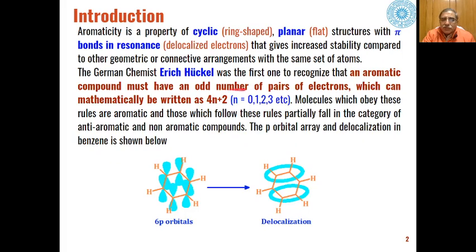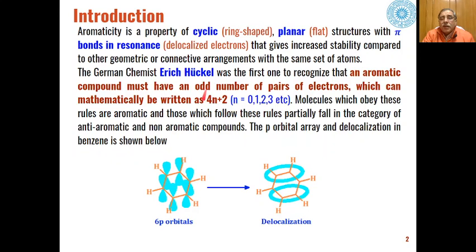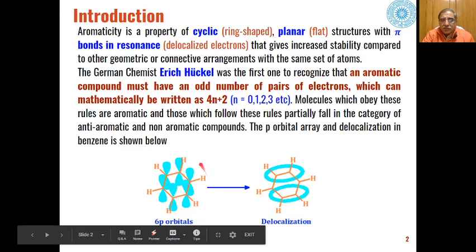This can be written mathematically as 4n+2, where n is any number: 0, 1, 2, 3, 4, and so on. Molecules which obey this law, called Hückel's rule, are said to be aromatic in nature.